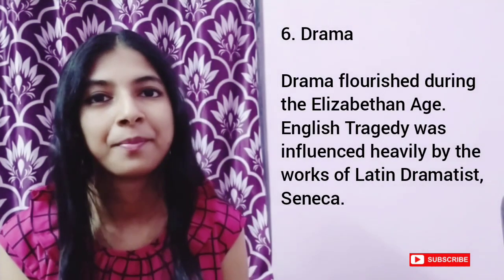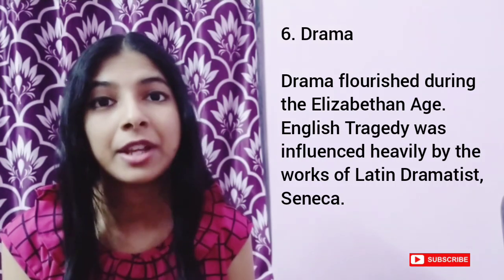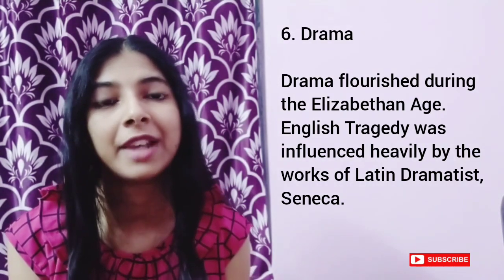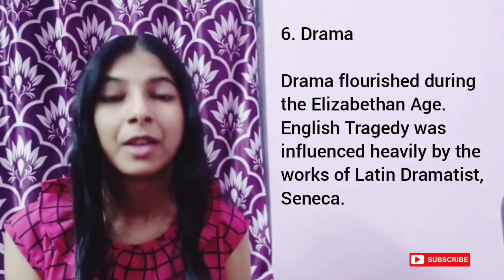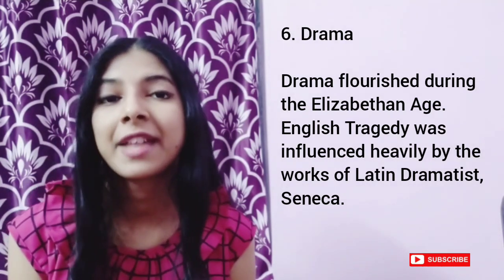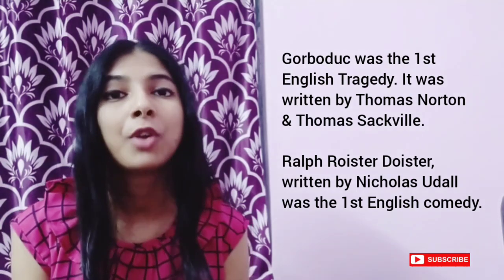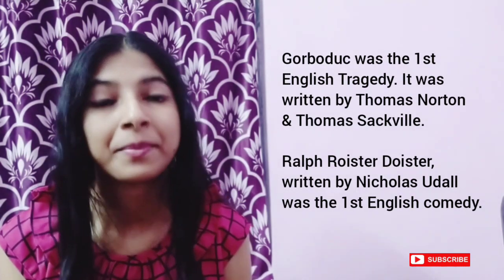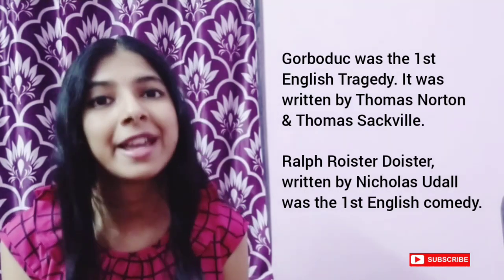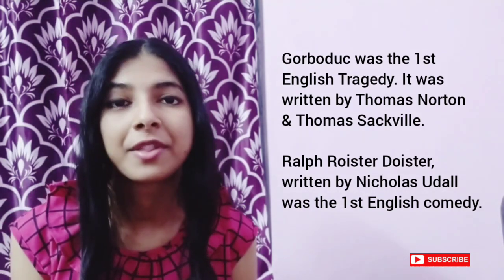Drama flourished during the Elizabethan Age. The English tragedy was heavily influenced by the works of Latin dramatist Seneca. Gorboduc was the first English tragedy, written by Thomas Norton and Thomas Sackville. Ralph Roister Doister was the first English comedy, written by Nicholas Udall. The University Wits contributed largely to Elizabethan drama. They were a group of young writers associated with Oxford and Cambridge University.